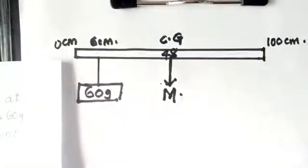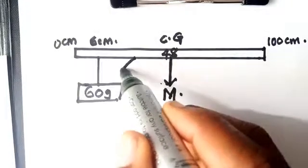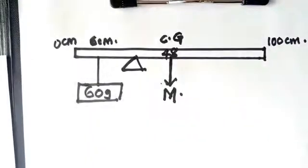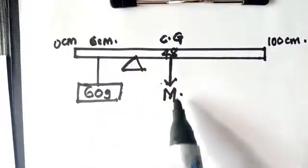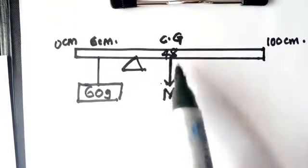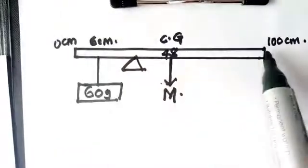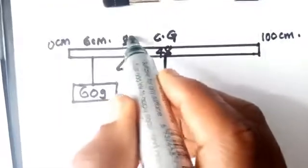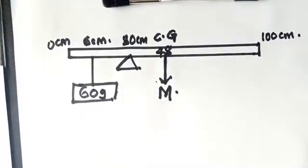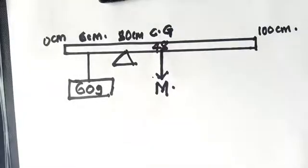Remember that every balance point was found using a knife edge. At this point, this is the knife edge. When the 60 gram was hung at 6 cm mark and the mass of the meter rule is at 48 cm mark, then this particular meter rule was now found to balance horizontally at this point which is 30 cm. That is what the whole thing means.